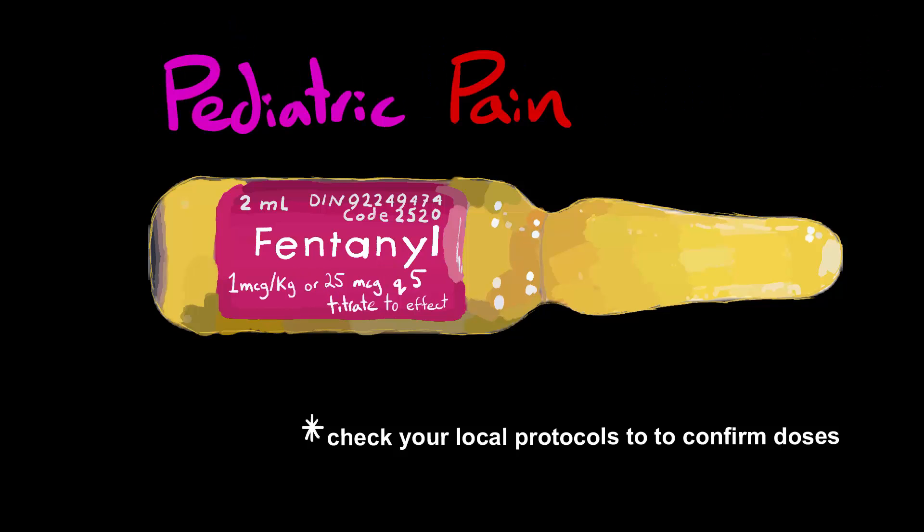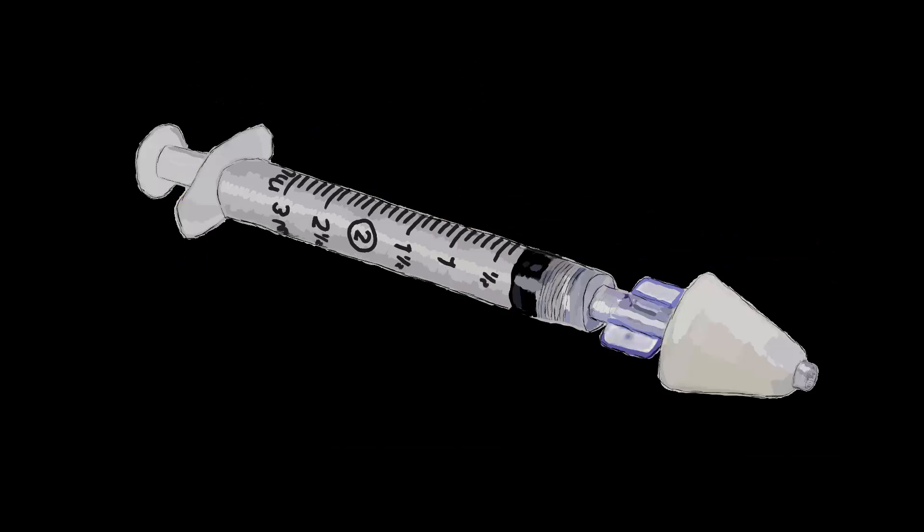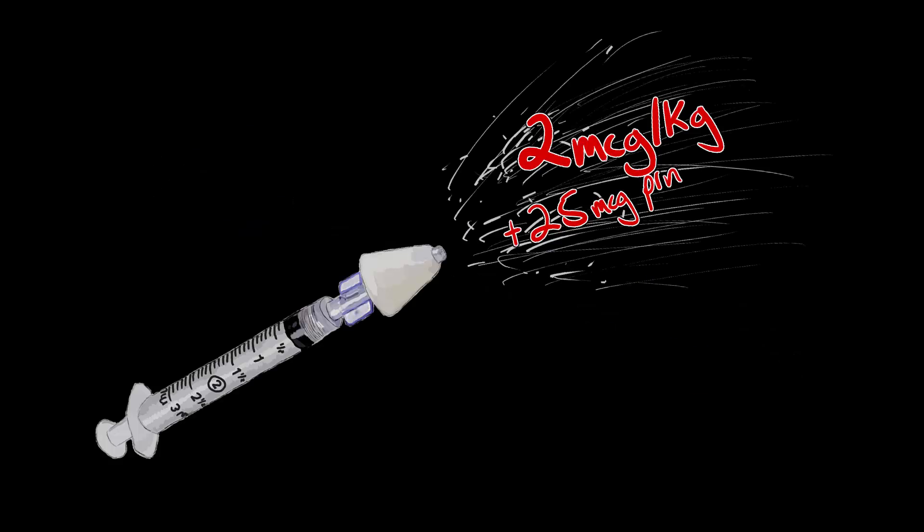For pediatric patients, 1 mcg per kilogram or give 25 mcg aliquots Q5 and titrate to effect, or reference the Broselow tape. Because needles are scary for peds and can cause more distress than the medication itself, and pediatric IVs aren't common to practice where I'm at, we can give intranasal fentanyl at a dose around 2 mcg per kilogram with follow-up maintenance doses of 25 mcg, titrating to effect.